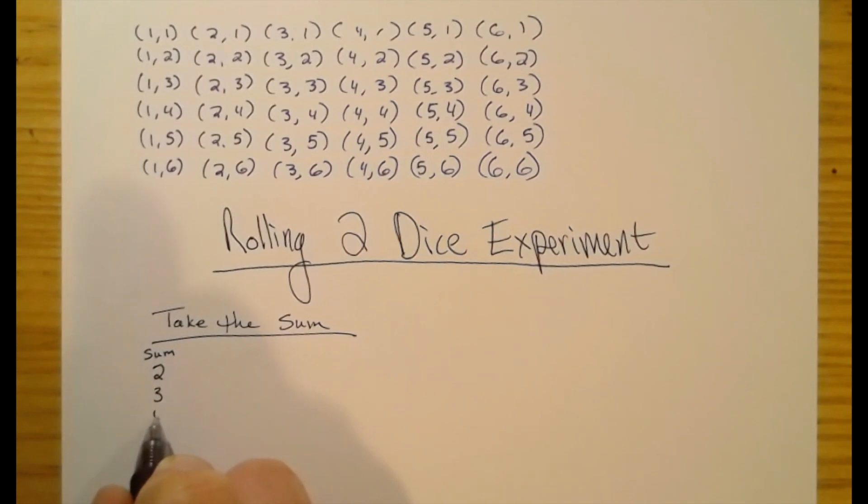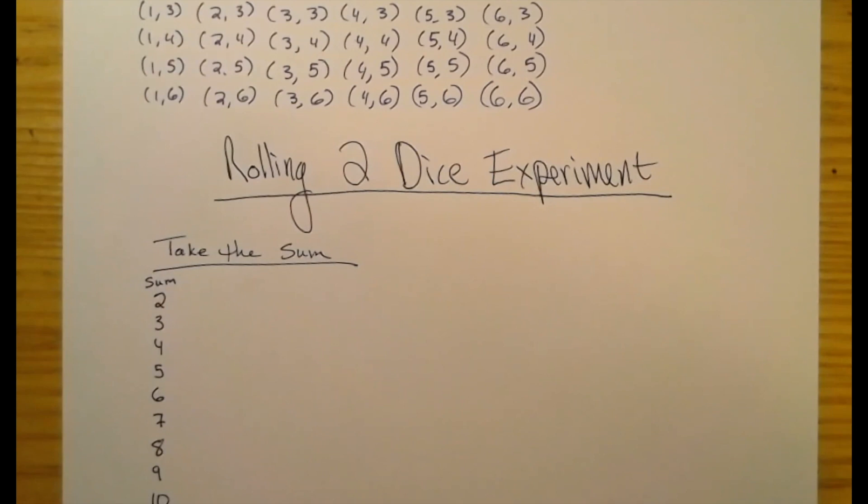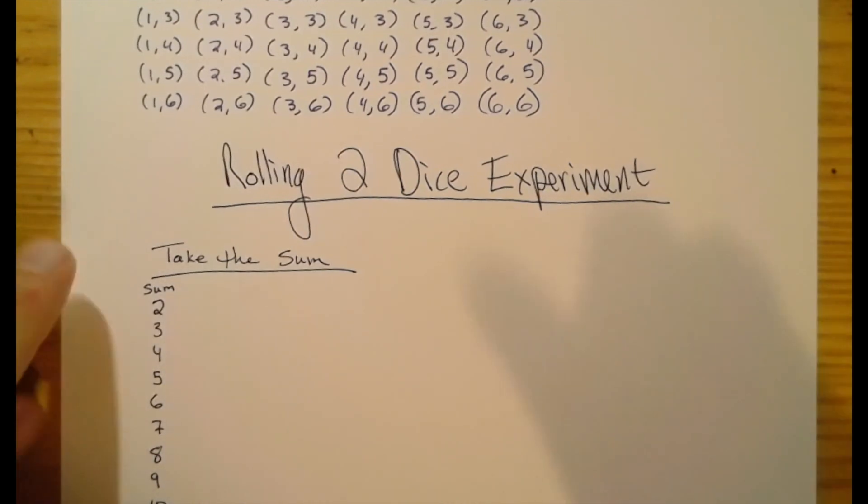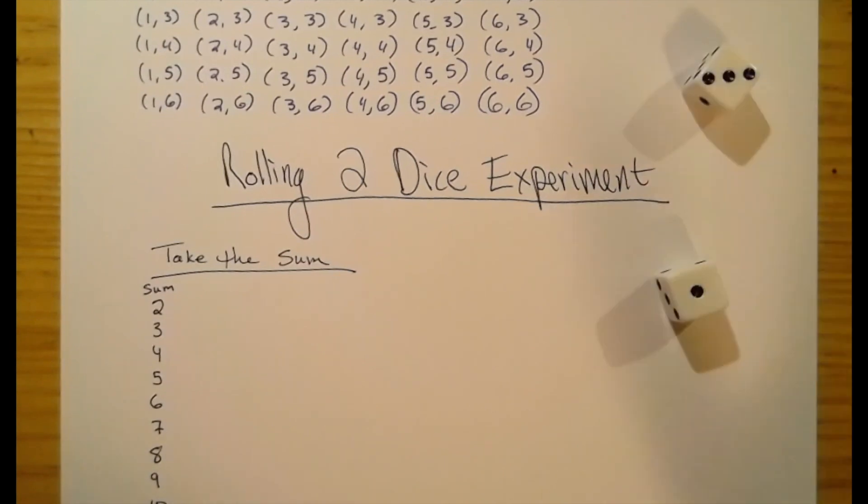You could get a three, four, five, six, seven, eight, nine, ten, eleven. And if you roll two sixes, you get a twelve. Now, we're going to take a look at what probability says we should get. And then we're going to actually roll the dice a bunch of times ourselves. And the more times we roll the dice, the closer we actually get to probability, which is amazing.